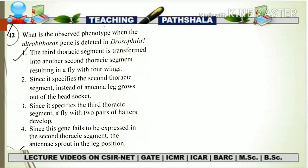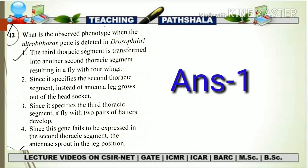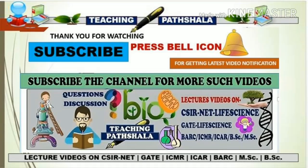The last option states: since this gene fails to express in the second thoracic segment, antennae sprout in the leg position. This is also wrong because this describes a mutation case regarding Antennapedia, not ultrabithorax. Ultrabithorax is only expressed in the third thoracic segment, not the second. So the correct answer for this question is option 1. If you like this video, give it a thumbs up and subscribe to this channel for more videos on CSIR-net. Thank you for watching.